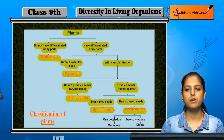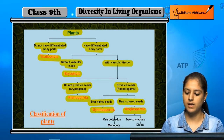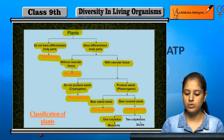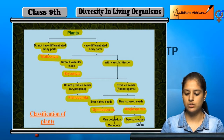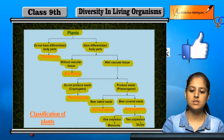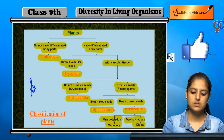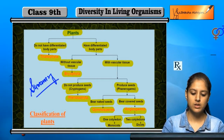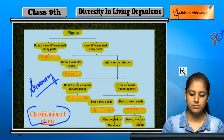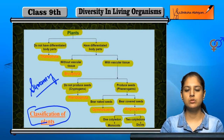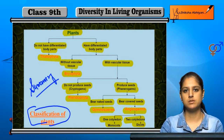Angiosperms are further divided into two parts: one cotyledon is called Monocots, and two cotyledons are called Dicots. This is a summary of the classification of plants. We will now move on to the classification of animals.